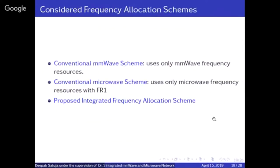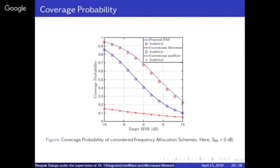We compare three scenarios: millimeter wave everywhere, microwave everywhere, and the proposed mixture. First, coverage probability: when using only millimeter wave, coverage is very low because of bandwidth and blockage effect issues combined. When using only macro wave, coverage is higher. But when you mix these two, coverage probability is higher than either standalone approach.